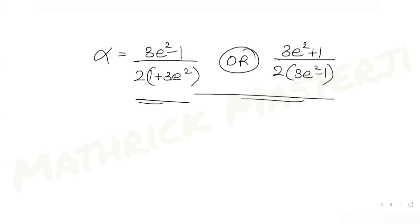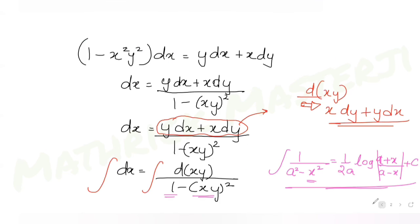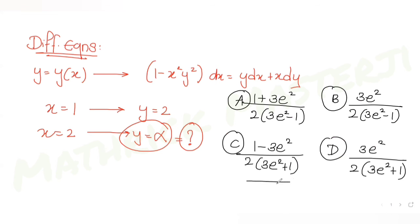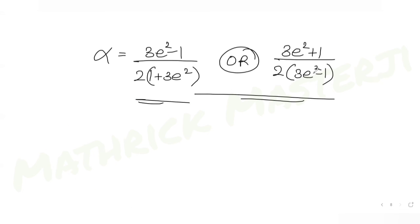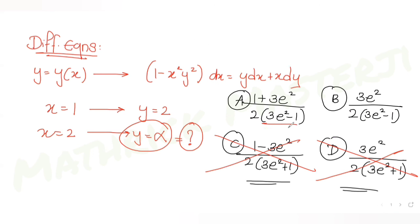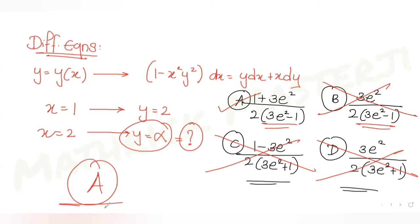Checking against the answer choices: the first option has (1 + 3e²) in the denominator but none has numerator 3e² - 1, so those are cancelled. The second part has 3e² - 1 in the denominator, and the first option has numerator 3e² + 1, which matches. So the correct answer is option A: (3e² + 1)/[2(3e² - 1)].